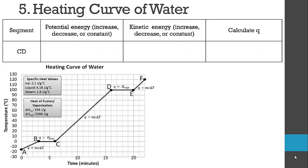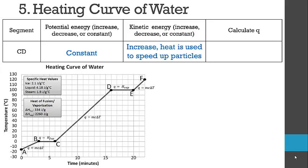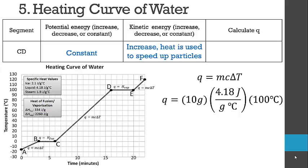In segment CD, all of the ice has melted and we now have entirely liquid water, and the temperature starts to rise again. Kinetic energy is increasing, so potential energy is constant. Using Q = MCΔt, we go from zero at point C to 100 at point D, with 10 grams of water and the specific heat of liquid water at 4.18 joules per gram degree Celsius. The temperature change is 100 degrees Celsius, heating the water to its boiling point, giving 4,180 joules.